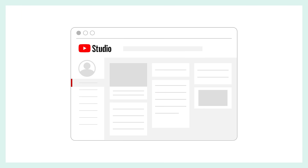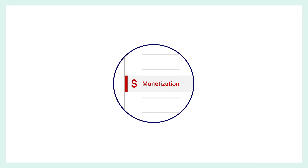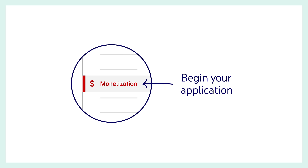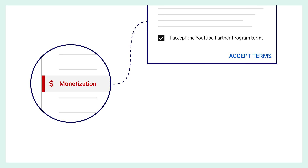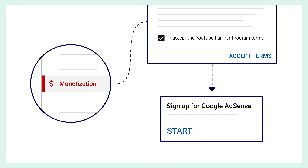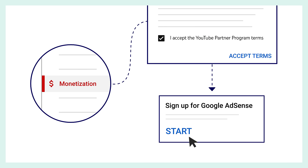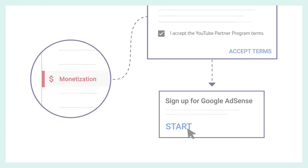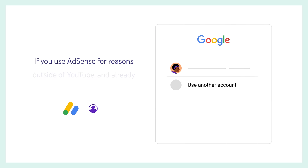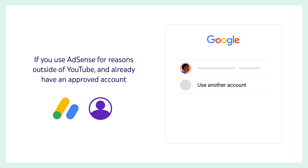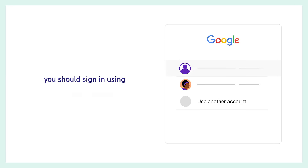First, sign into YouTube Studio on desktop. Go to Monetization in the left menu where you'll begin your application. From there, review and accept the YouTube Partner Program terms. Then click Start on the Sign Up for Google AdSense card. Then choose which Google account you would like to use for AdSense. Note that if you use AdSense for reasons outside of YouTube and already have an approved account, you should sign in using that Google account.